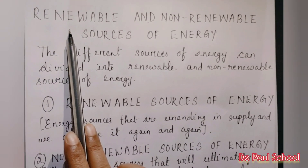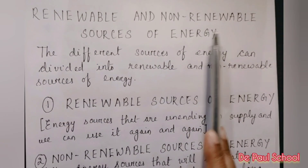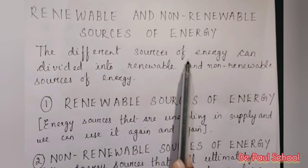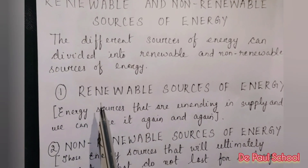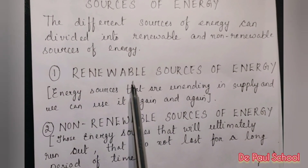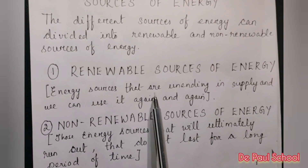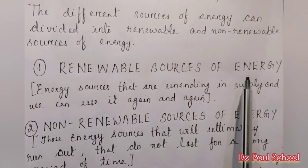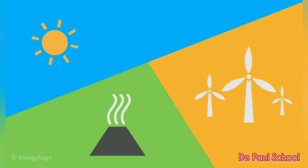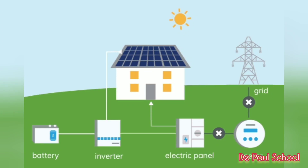Now let's move on to renewable and non-renewable sources of energy. The different sources of energy can be divided into renewable and non-renewable sources. Energy sources that are unending in supply and can be used again and again are called renewable sources of energy. For example, solar energy is the energy provided by the sun.